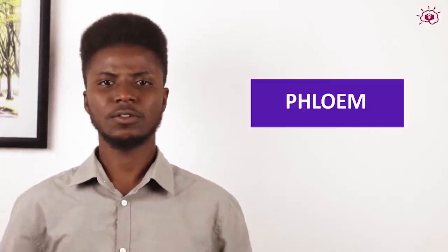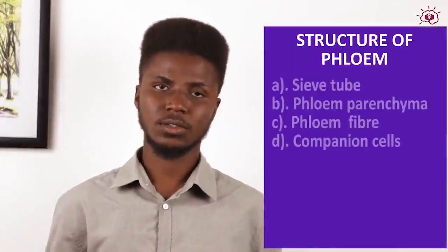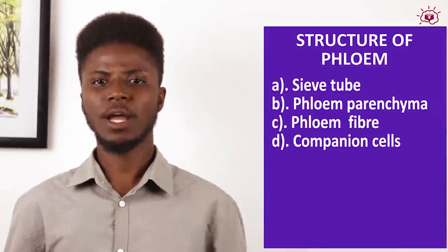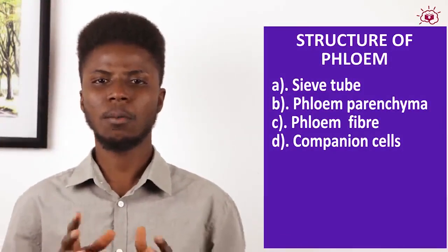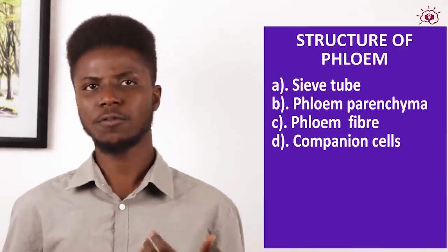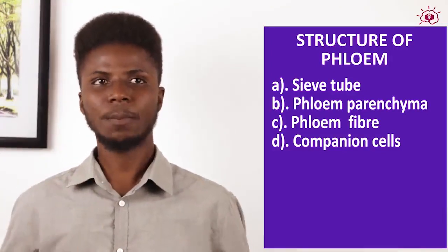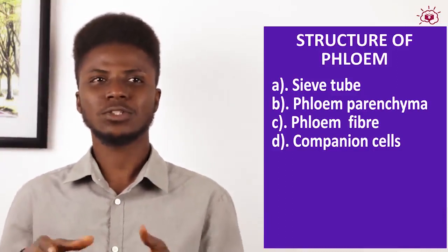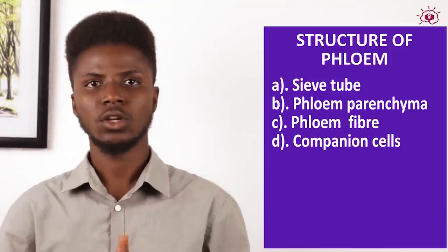Finally, phloem is present in almost all the other tissues. It is located in the vascular bundles alongside xylem and parenchyma. Its structure contains sieve tubes, phloem parenchyma, phloem fiber, and companion cells. Phloem conducts manufactured food from the leaf to other parts of the plant, and it also provides support, joining the other tissues in supporting the plant.